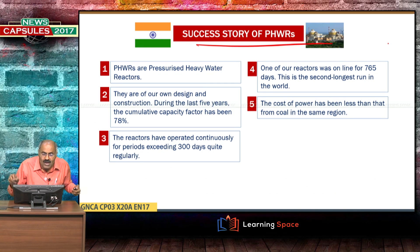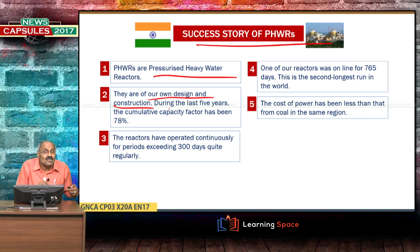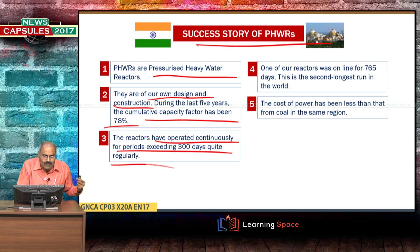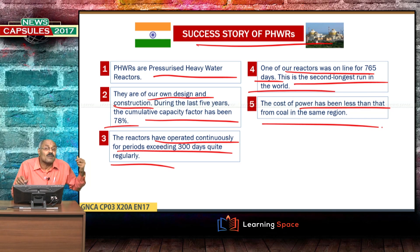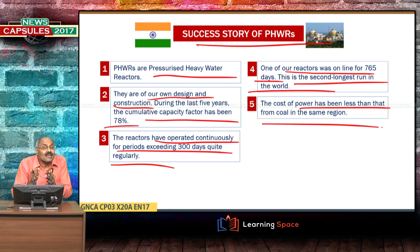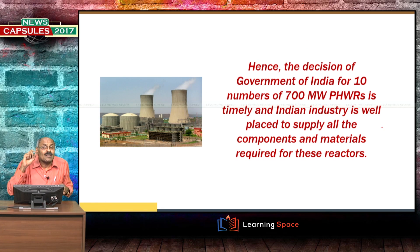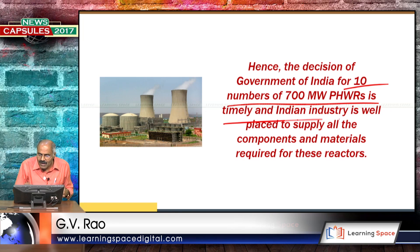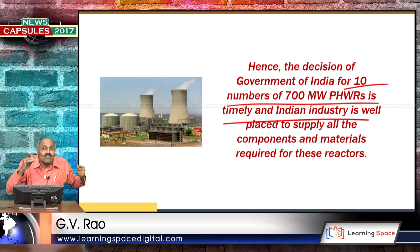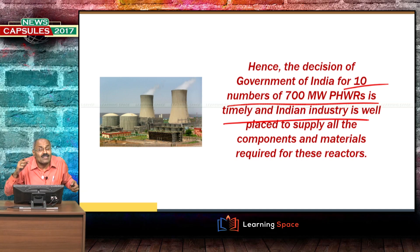The success story of PHWRs in India: pressurized heavy water reactors are of our own design and construction. During the last 5 years the cumulative capacity factor was 78%, and reactors have operated continuously for periods exceeding 300 days regularly. One reactor was online for 765 days — the second longest run in the world. The cost of power has been less than that of coal from the region. Given the poor global scenario and India's success with heavy water reactors, the decision to build 10 numbers of 700 megawatt PHWRs is timely, with Indian industry well placed to supply all required components.